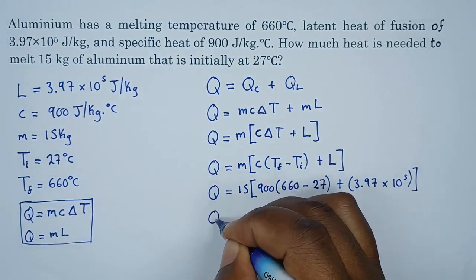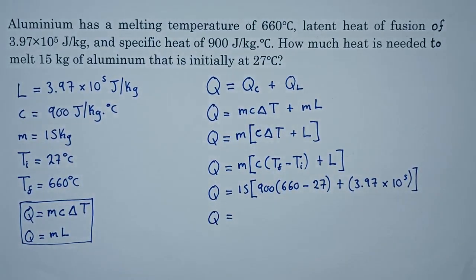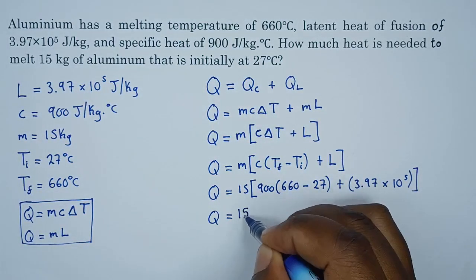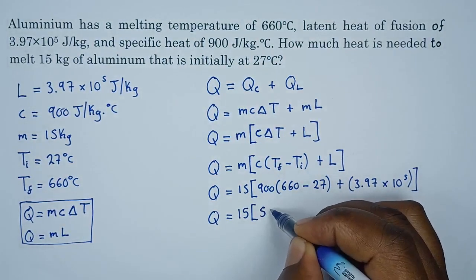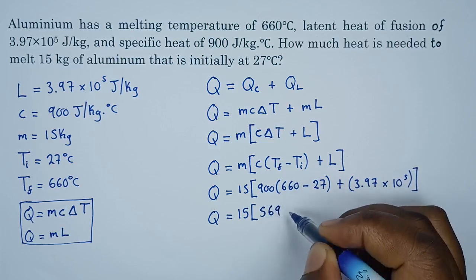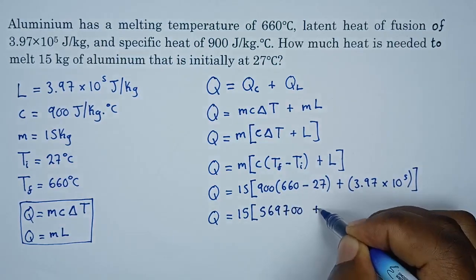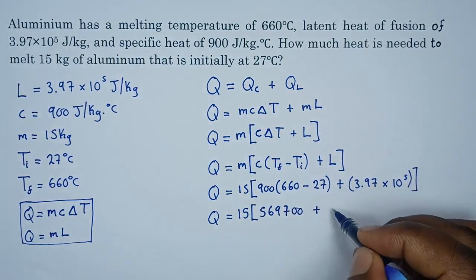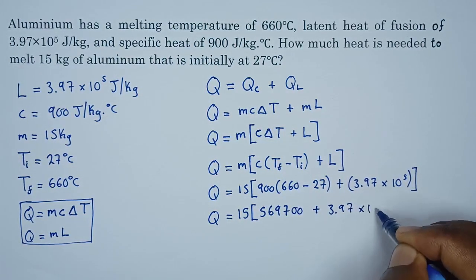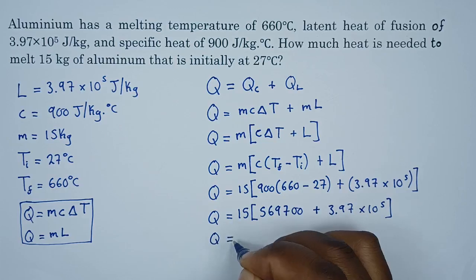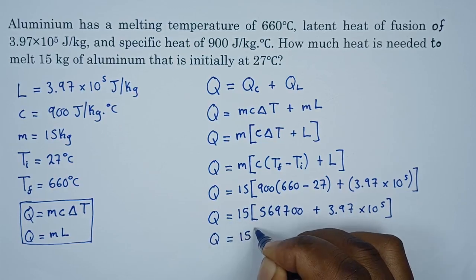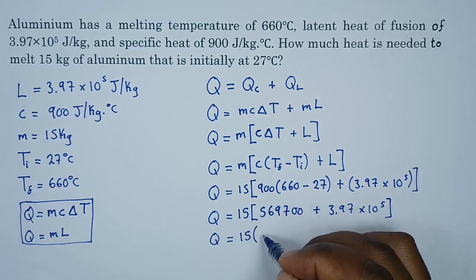So energy will be given as, 15 is still outside. If we multiply what we get here we're going to get 569,700 plus of course this value that we have here which is 3.97 times 10 to the power of 5. So if we decide to add up whatever is inside the brackets, Q will be 15 times what we have inside the brackets which is now 966,700.